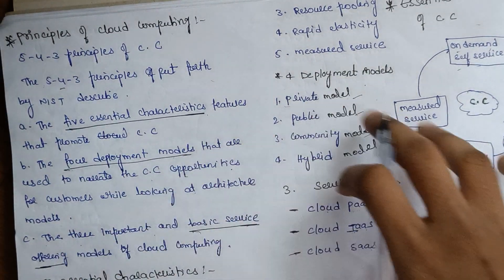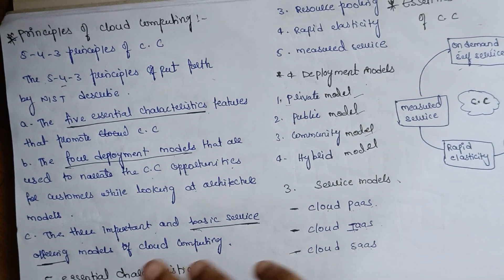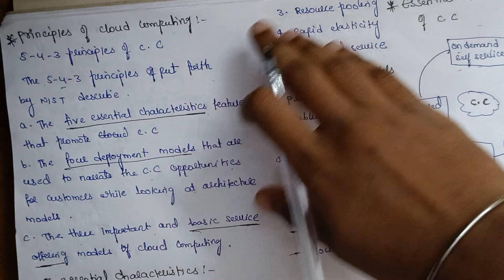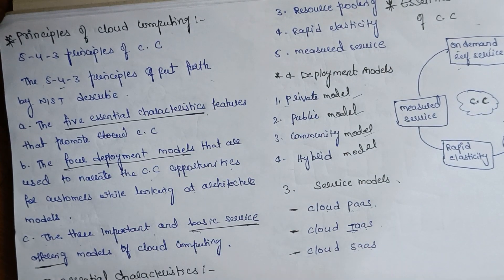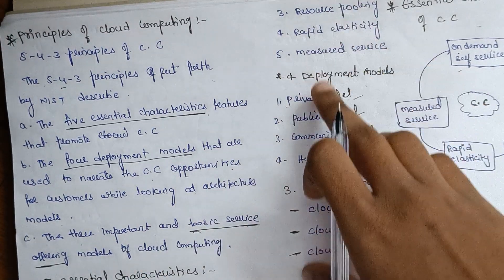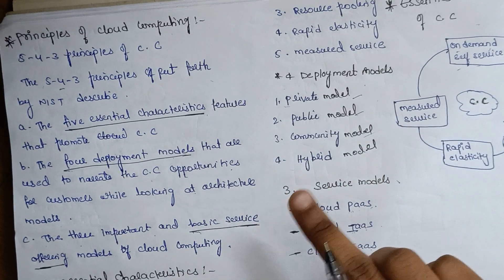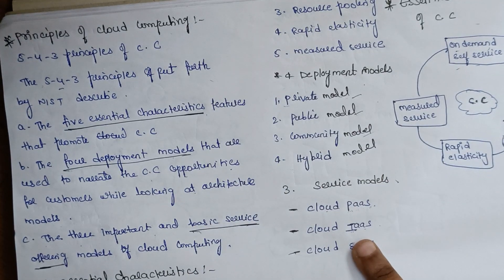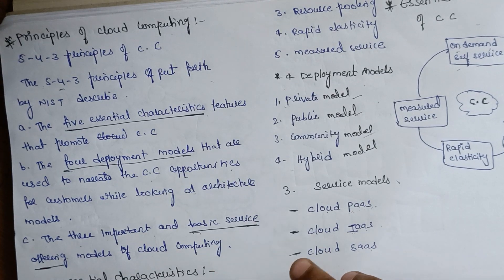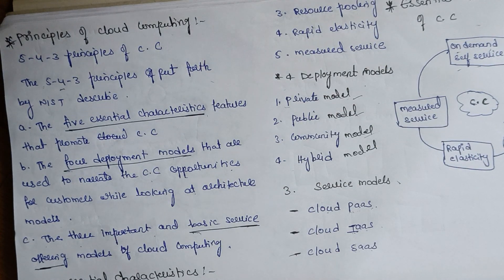These are the 5 essential characteristics, 4 deployment models, and 3 service models — the principles of cloud computing. In the next videos, we will elaborate on each one with diagrams and detailed explanations.